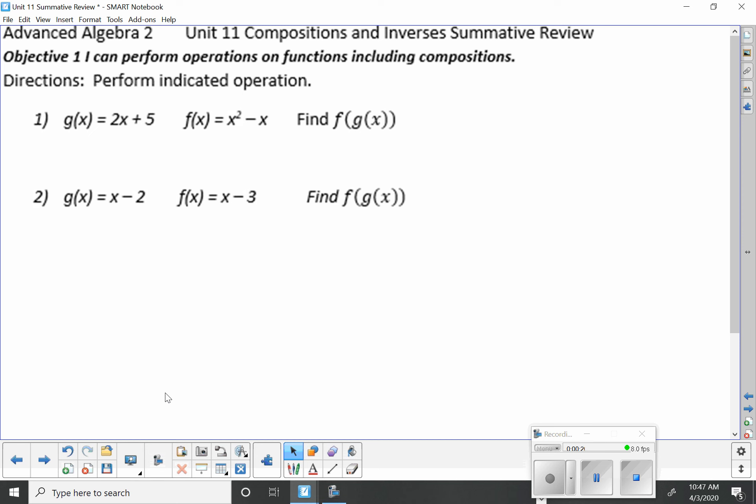First we'll look at these first two problems. G of x is equal to 2x plus 5, and f of x is equal to x squared minus x. We want to find f of g of x. So, I'm going to find the easiest way to start working on this. f of x is on the outside, so here's f of x.